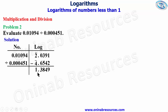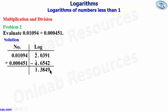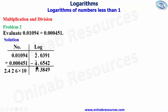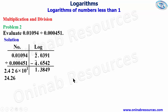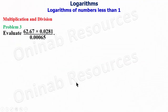We keep the integer part and check the anti-logarithm of .38 under 4, difference 9, which gives 2426. Place the point immediately after the first digit and multiply by 10 to the power of 1. In ordinary form the answer is 24.26. That's the end of problem two.